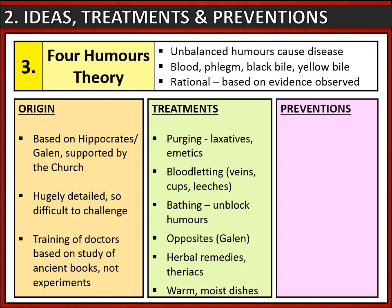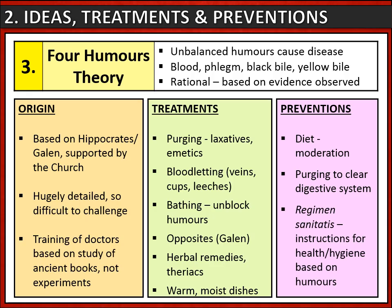The four humours theory also affected prevention. Patients were encouraged to keep their humours in balance using a moderate diet without too much fatty food. They were also encouraged to purge themselves regularly to clear out the digestive system where the humours were made. If you were rich, you might afford a doctor to write you a regimen sanitatis — a detailed list of instructions on health and hygiene based on the humours, telling patients individually how to keep their humours in balance.